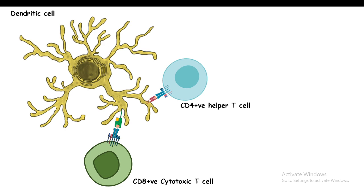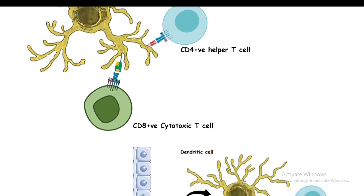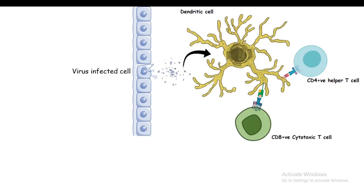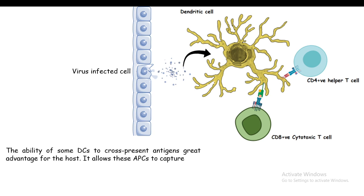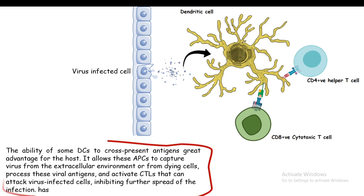Via cross presentation, the dendritic cell is able to present antigenic peptides to CD8 positive cytotoxic T cells. The advantage is that a dendritic cell can sample a nearby tissue, find that it was virus-infected, sample antigens from these virally infected dead cells, and quickly present them to CD8 positive cytotoxic T cells so that the CD8 T cell can take quick action and kill those virus-infected cells.